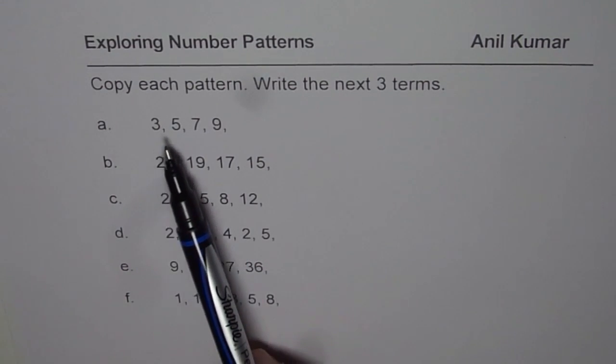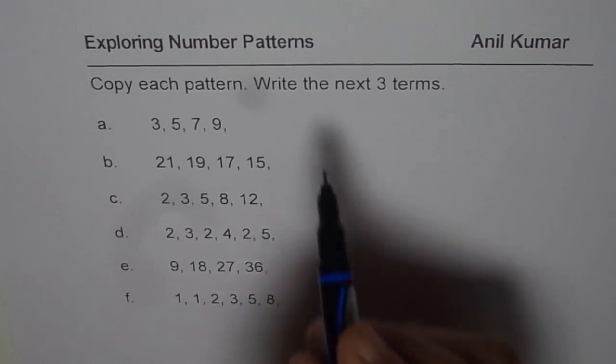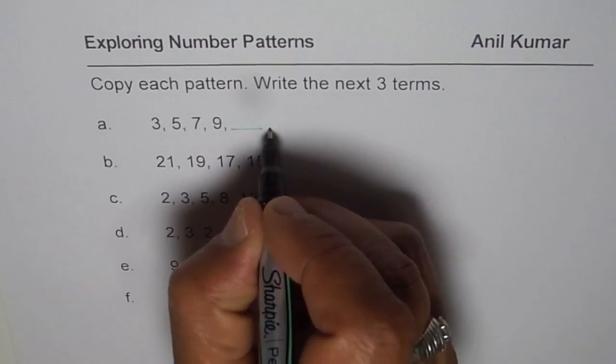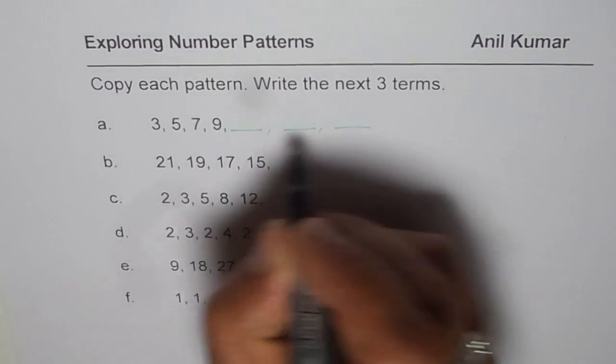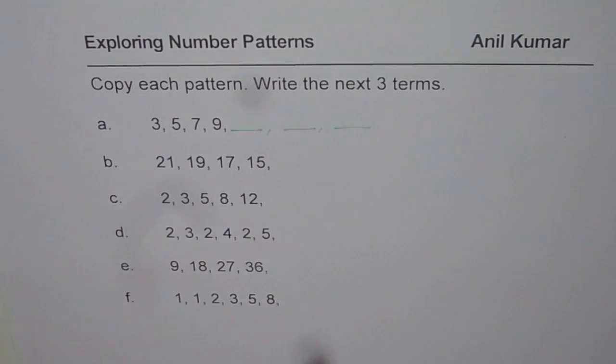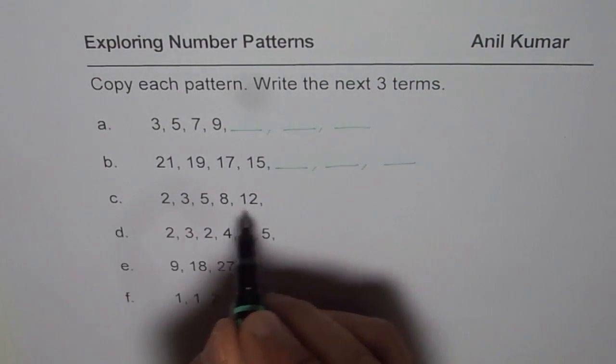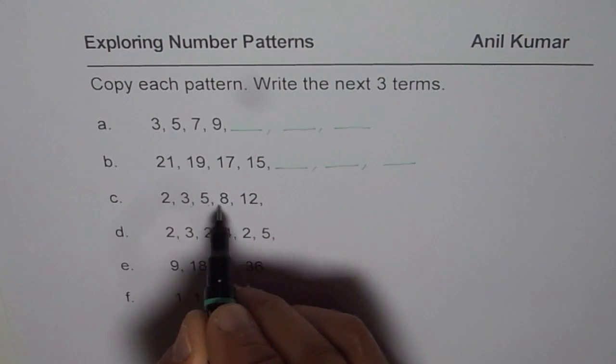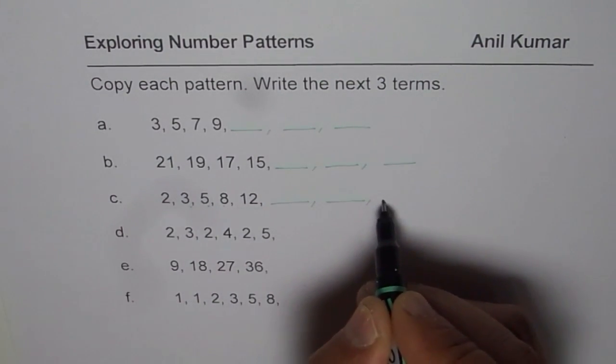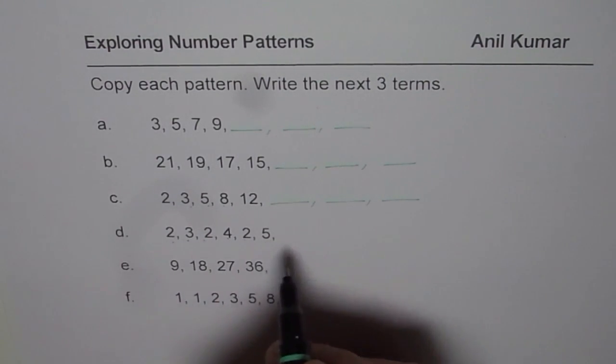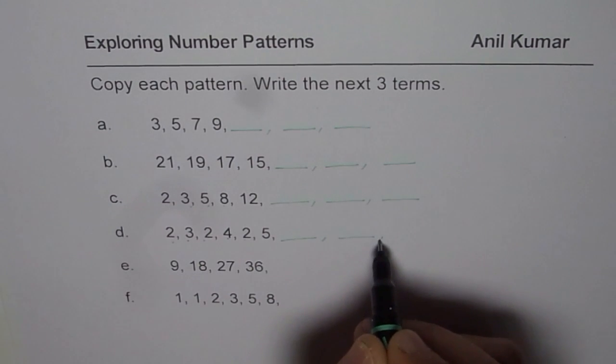The first one is 3, 5, 7, 9. You need to write next three terms. That is to say what comes after 9 and then these three terms, correct? So likewise, copy each pattern and write next three terms. So we have now 2, 3, 5, 8, 12 and then next three terms. 2, 3, 2, 4, 2, 5, next three terms, right?